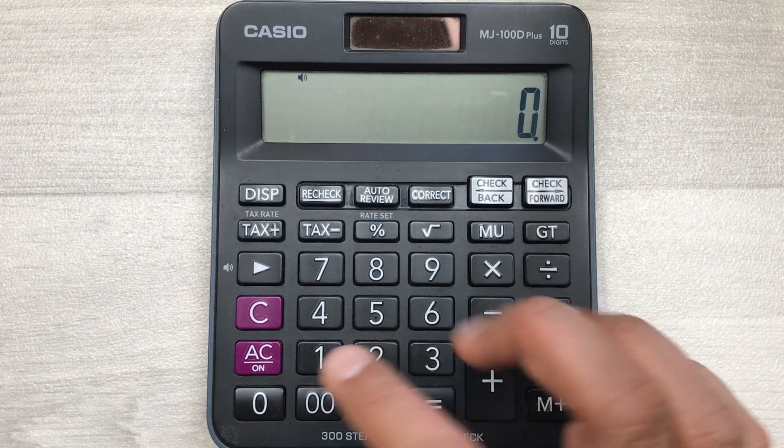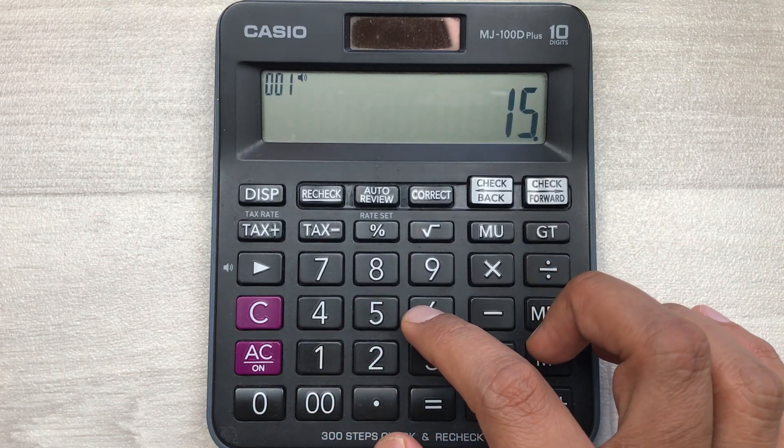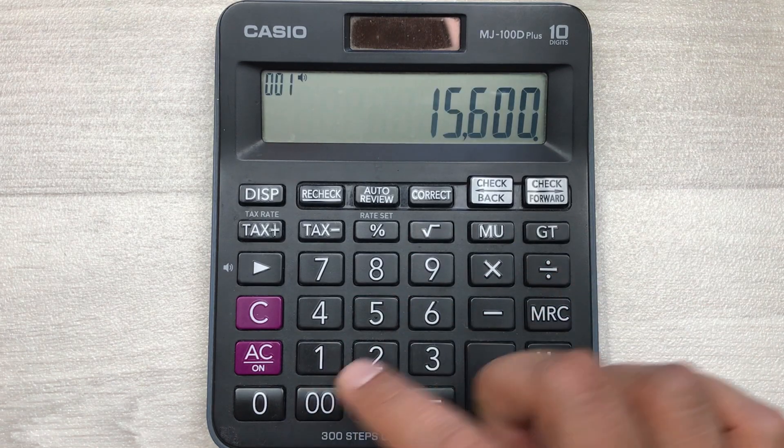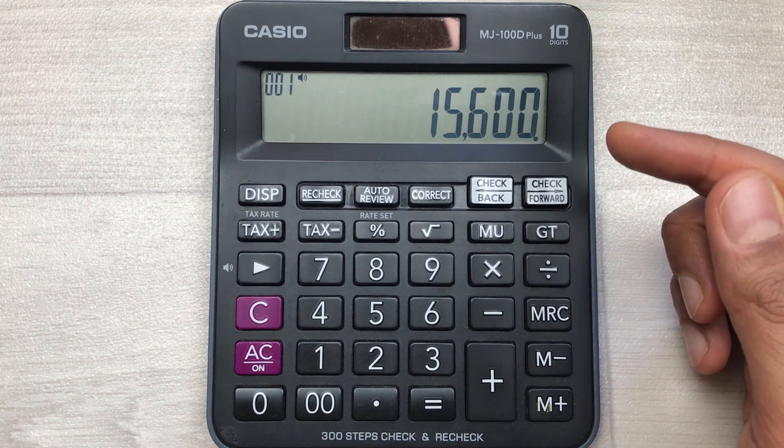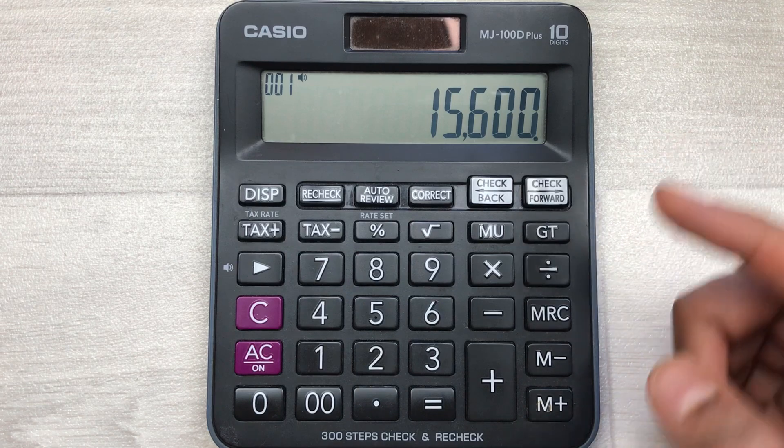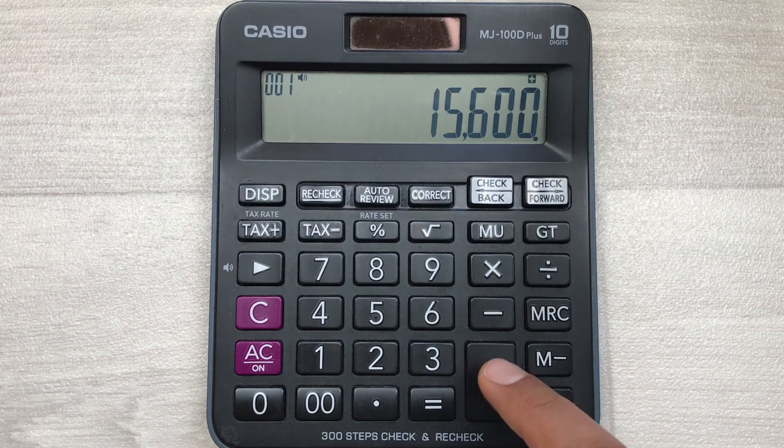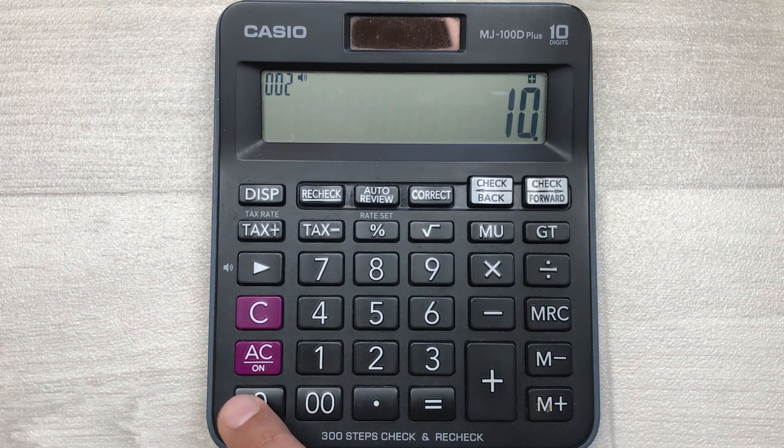Let's say we have an item and the price of that item is 15600. Now we want to increase this price by 10 percent. Simply, press plus, then press 10, and then press this percentage button.